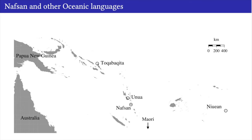The languages I looked at are: Nafsan, spoken on Efate; Unua, spoken in Malakula, Vanuatu; Toabaita, spoken in the Solomon Islands; and Nguyen and Maori as two Polynesian languages.